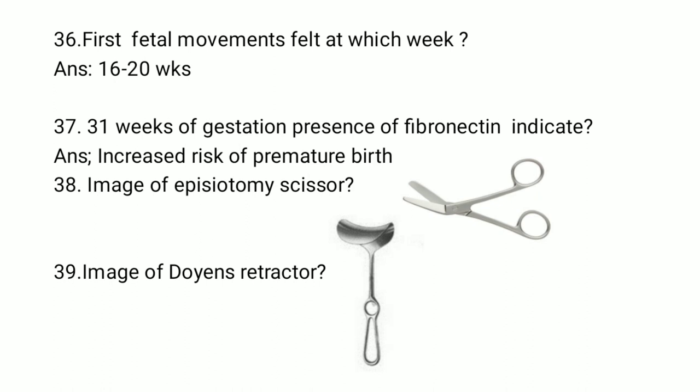Next question based on quickening: First fetal movements felt at which week in pregnancy? The answer is 16 to 20 weeks. Another question: At 31 weeks of gestation, presence of fibronectin indicates an increased risk of premature birth.